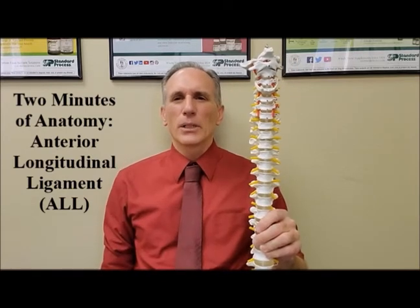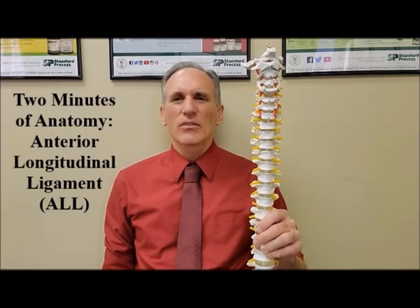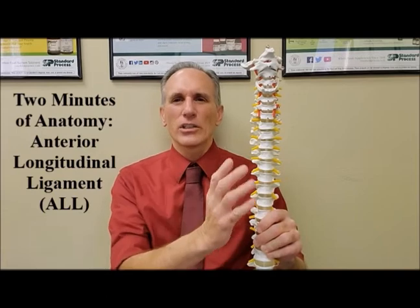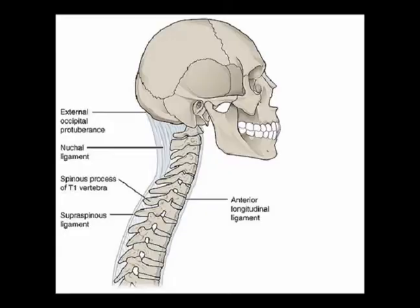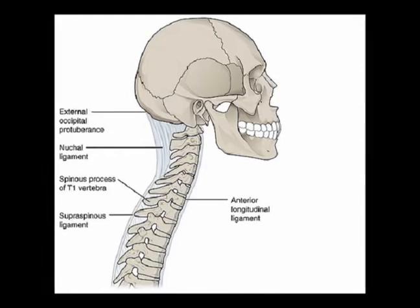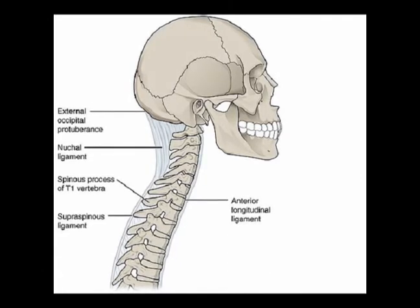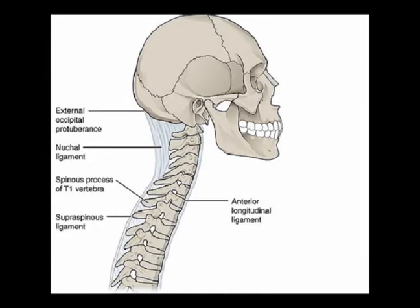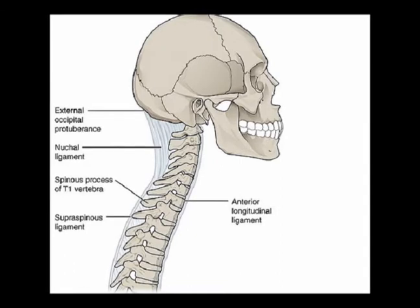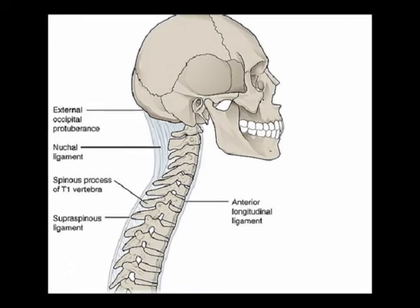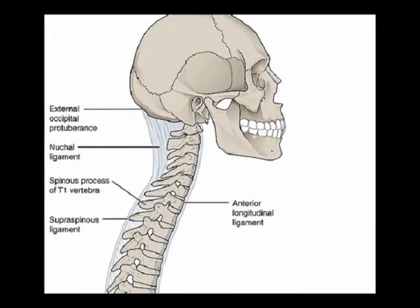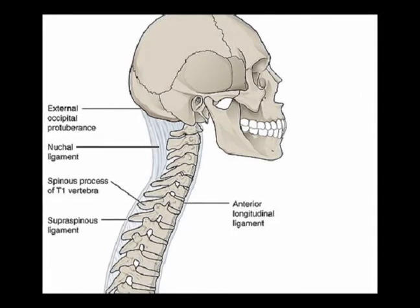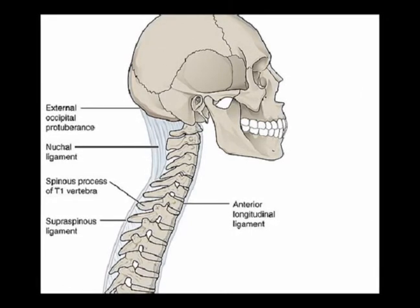It helps to provide stability to the vertebral column by preventing an excessive amount of extension, which is the medical term for bending backwards, also referred to as hyperextension. It traverses all of the vertebral bodies and intervertebral discs on their anterior side.